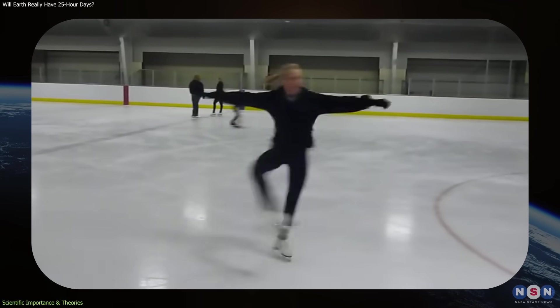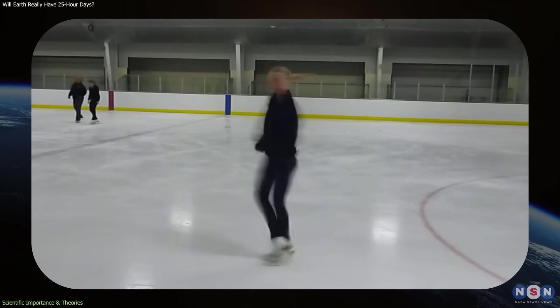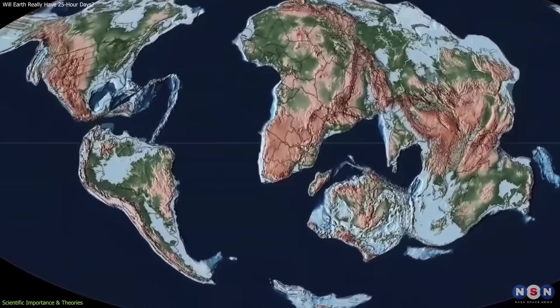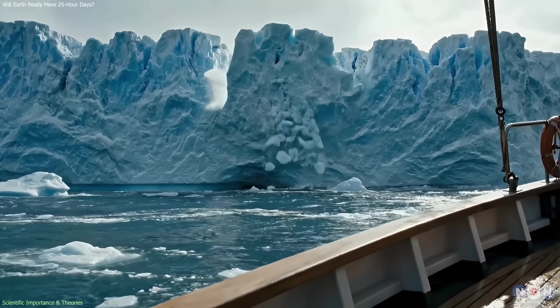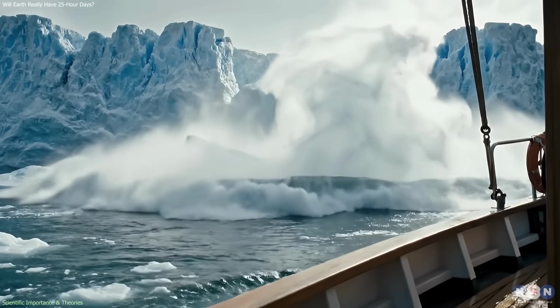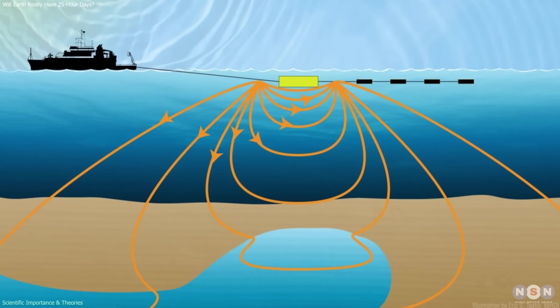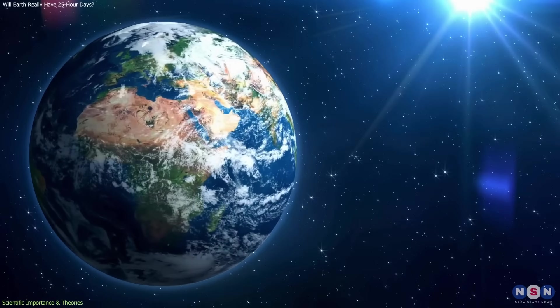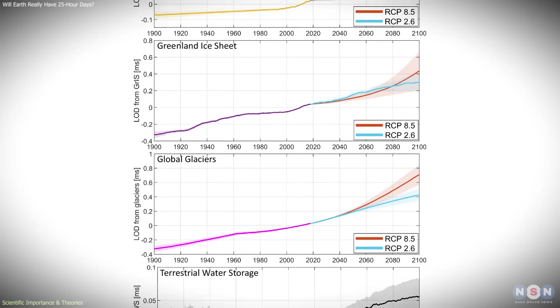Climate-related processes contribute to these mass shifts. As large ice sheets melt in Greenland and Antarctica, water moves from land into the oceans. Groundwater extraction and large reservoirs also redistribute mass across the planet. These changes are small compared to Earth's total mass, but precise measurements show they are not negligible.